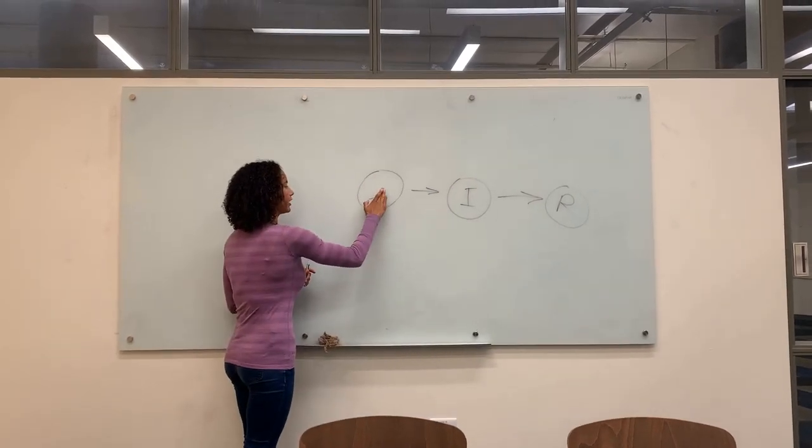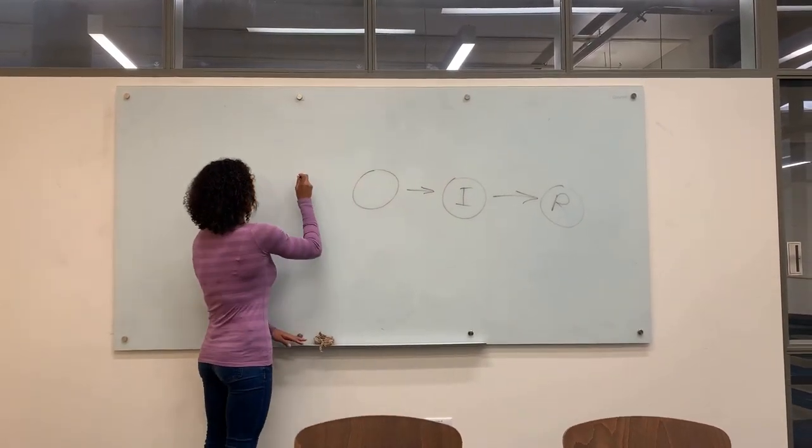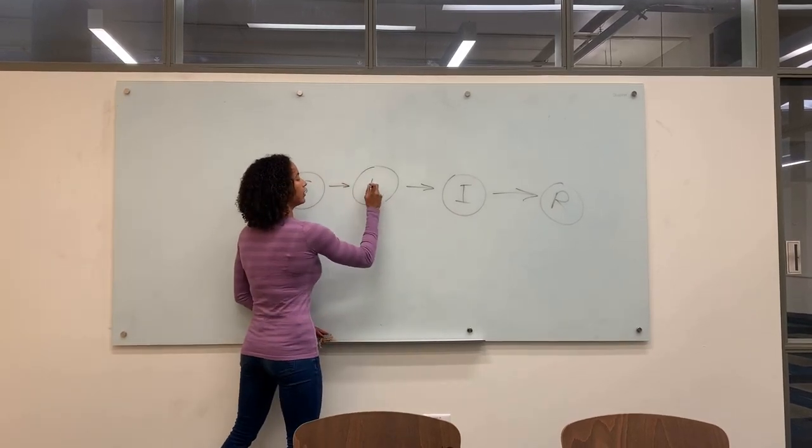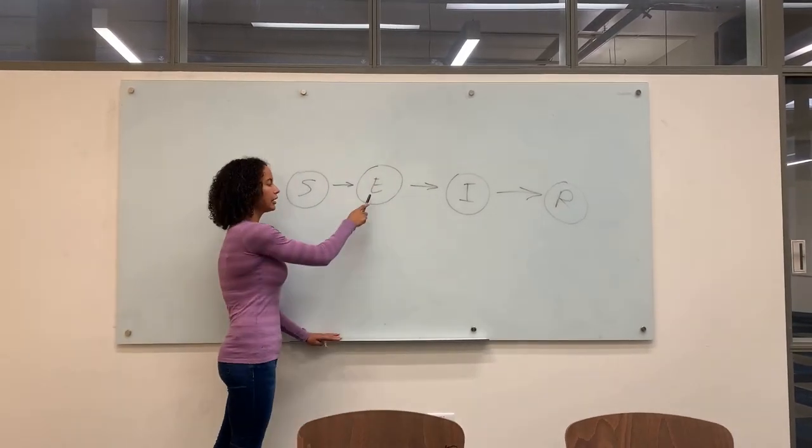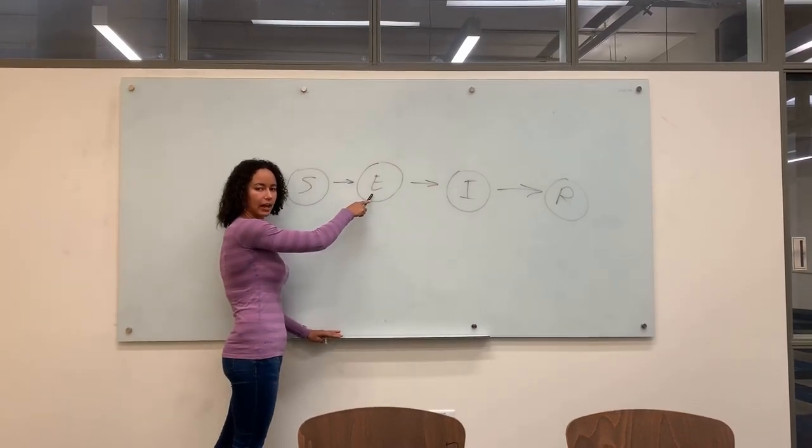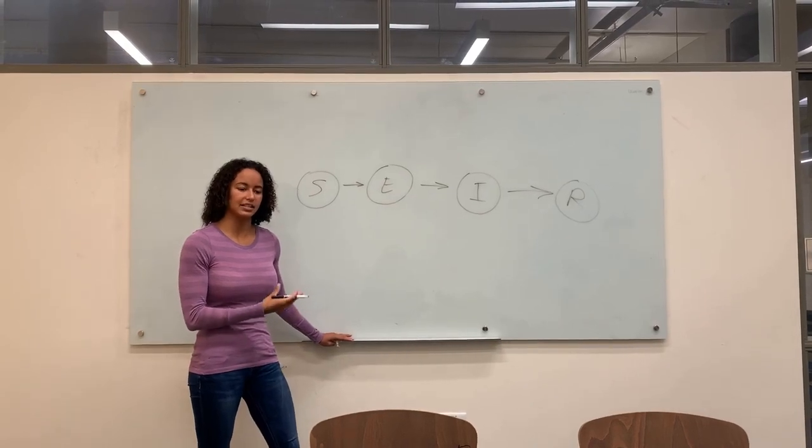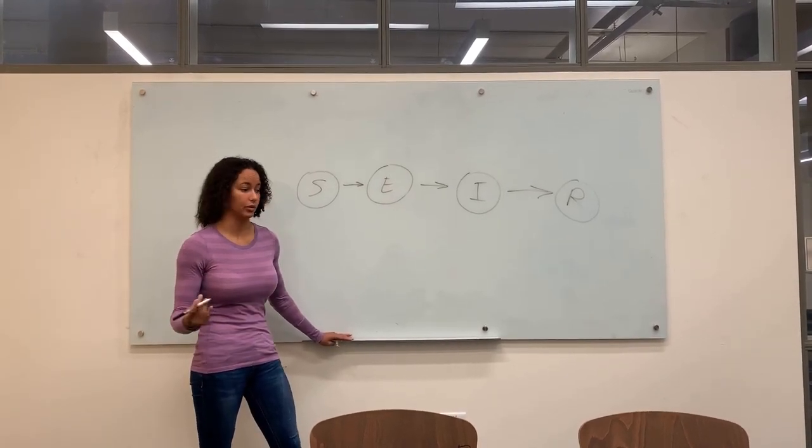We add several populations to our model, starting with E. E stands for asymptomatic individuals. These are people that don't show symptoms of the disease even though they have been exposed to it.